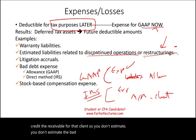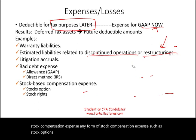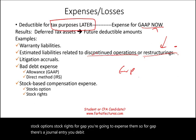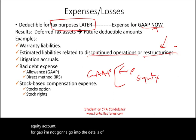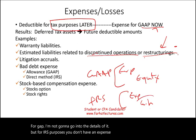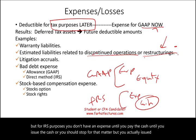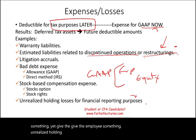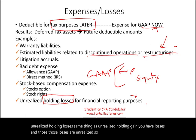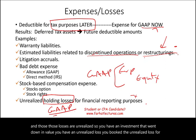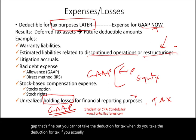Stock compensation expense — such as stock options or stock rights — is expensed for GAAP with a debit to expense and credit to an equity account, but for IRS purposes no deduction is allowed until cash or stock is actually issued to the employee. Unrealized holding losses are also recognized for GAAP when an investment declines in value, but you cannot take the deduction for tax until you actually sell the investment and realize the loss. Both of these result in a deferred tax asset.